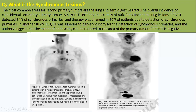Here are two examples of synchronous tumors: the primary lesion in the neck and a synchronous lung cancer. This is a coronal PET in a patient with right parotid malignancy, shown by the arrow, demonstrating a synchronous lesion in the left upper lung with mediastinal lymph nodes — also a metastatic lesion. The uptake in the thyroid gland is incidental but not specific, mostly related to thyroiditis.